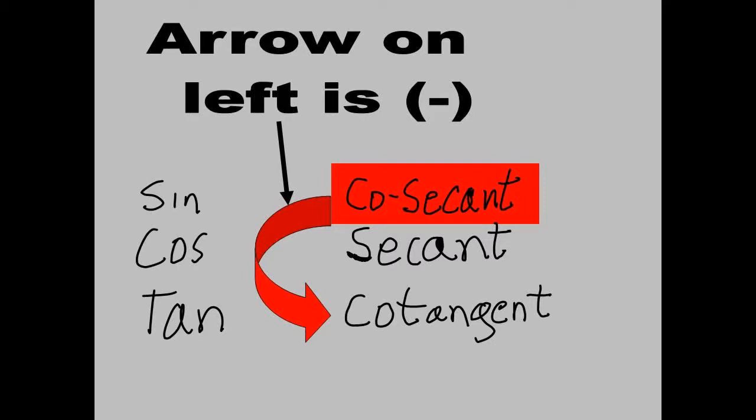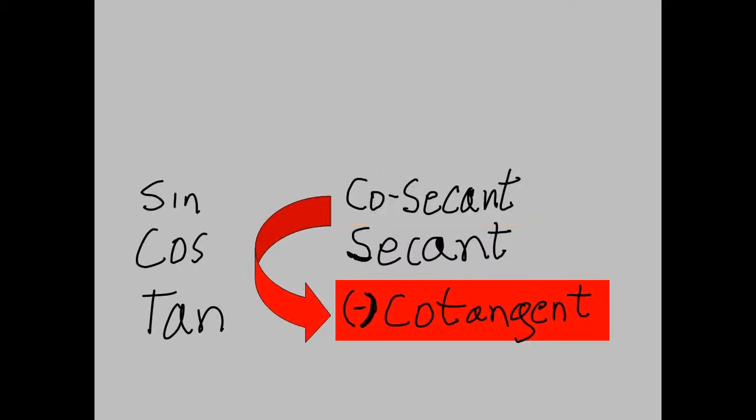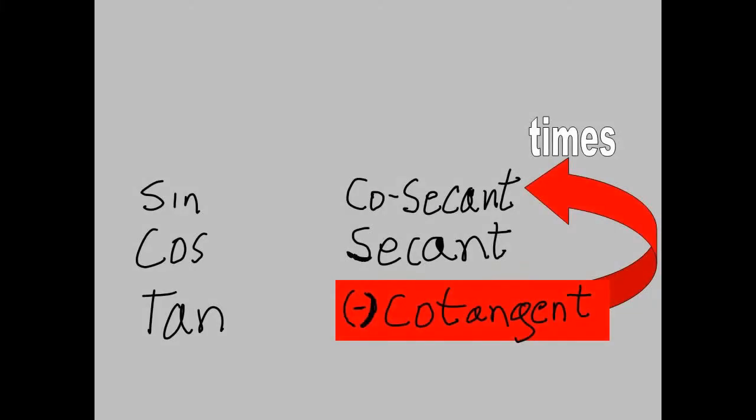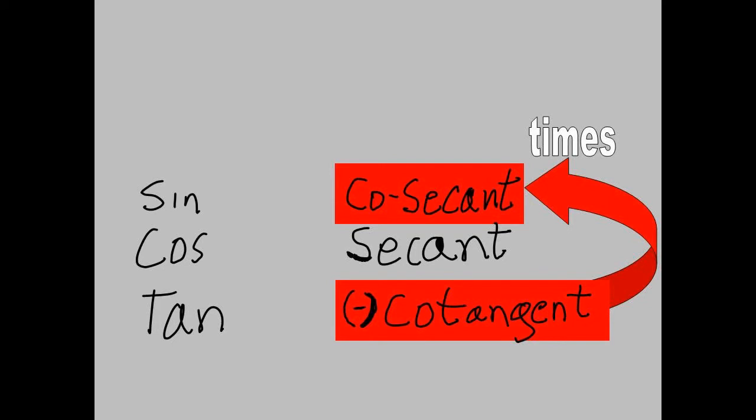The arrow on the left is negative. The derivative of cosecant is negative cotangent times cosecant.